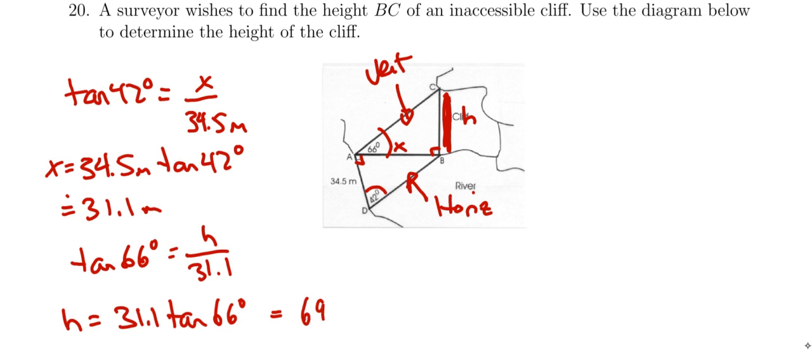And we get that this is going to be 69.8 meters tall. That's from the base at B up to the top of the cliff there, and that's the opposite side of the vertical triangle.